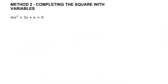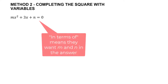This is the kind of question where they may say: solve for x in terms of m and n. So they want m and n to appear in the solution when you get an answer for x. Let's go ahead and work through it.